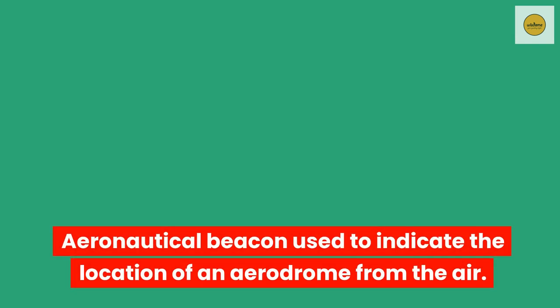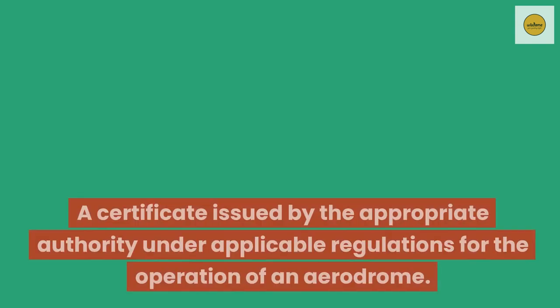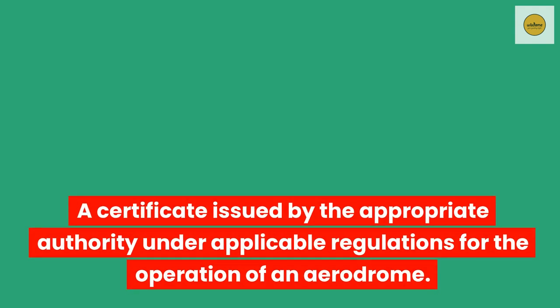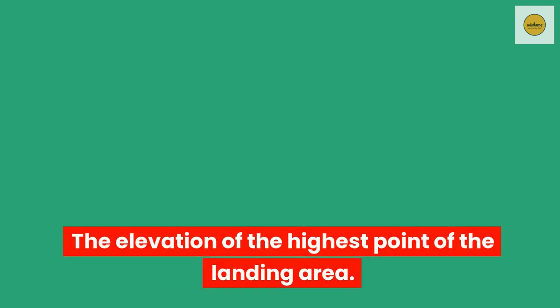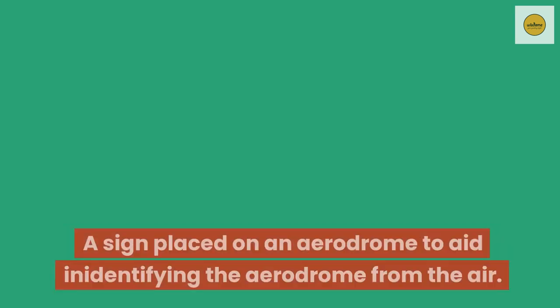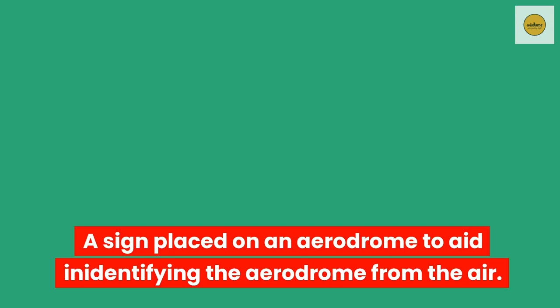Aerodrome beacon. An aeronautical beacon used to indicate the location of an aerodrome from the air. Aerodrome certificate. A certificate issued by the appropriate authority under applicable regulations for the operation of an aerodrome. Aerodrome elevation. The elevation of the highest point of the landing area. Aerodrome identification sign. A sign placed on an aerodrome to aid in identifying the aerodrome from the air.